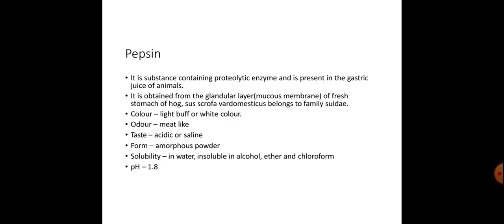Pepsin is a substance containing proteolytic enzyme present in the gastric juice of animals. It is obtained from the glandular layer of the mucous membrane of the fresh stomach of hog Sus scrofa domesticus, belonging to family Suidae. Color: light buff or white; odor: meat-like; taste: acidic or saline; form: amorphous powder; solubility: soluble in water, insoluble in alcohol, ether, and chloroform. Maximum activity at pH 1.8, as it is present in gastric juice.